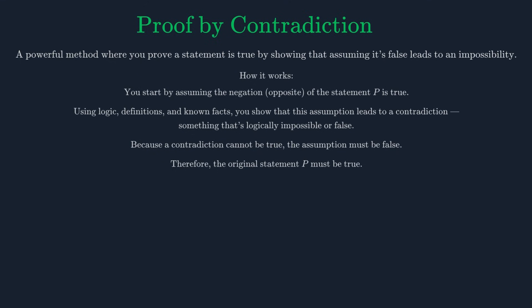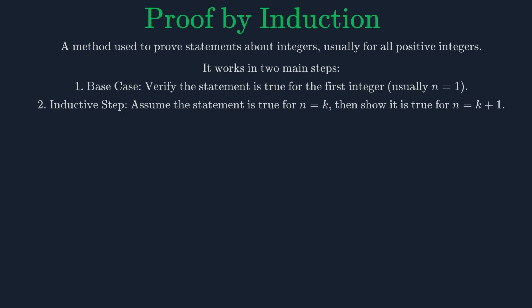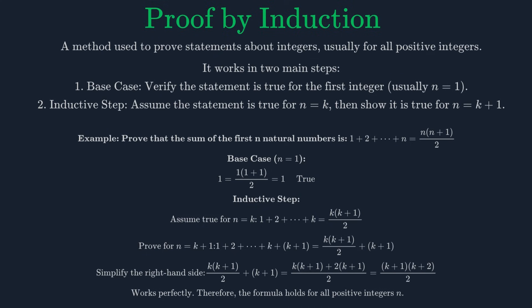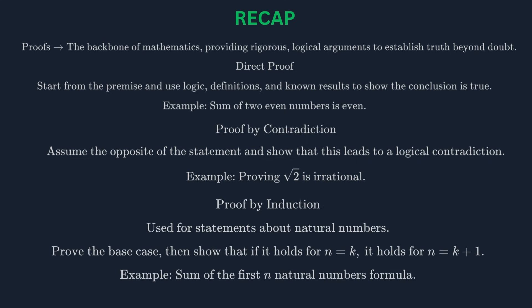Another powerful technique is proof by contradiction. To prove a statement P, you assume the opposite, or negation of P, is true. Then you show that this assumption leads to a logical contradiction. Since a contradiction cannot be true, your initial assumption must have been false, which means the original statement P must be true. Finally, we have proof by induction. This is used to prove statements about all natural numbers. It's like a chain reaction. You prove the first case, called the base case. Then you prove that if any case is true, the next case must also be true. This is the inductive step. Once you have these two pieces, you've proven the statement for all natural numbers. So to recap: proofs are the backbone of mathematics. We've seen three common methods—direct proof, proof by contradiction, and proof by induction.